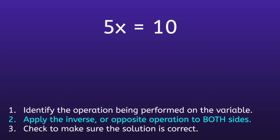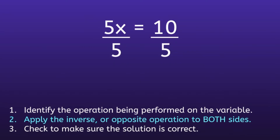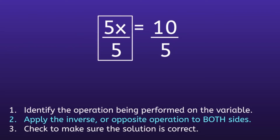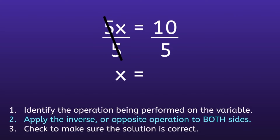Since x was being multiplied by 5, we are going to divide both sides by 5. Notice how the fraction bar represents division. If we focus on the left side, we have 5x divided by 5. And 5 divided by 5 is 1, so we can cancel out the 5s, which leaves us with x.